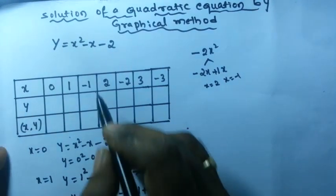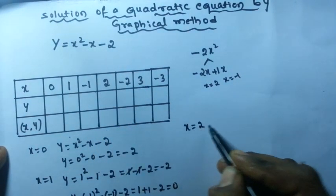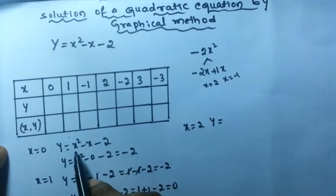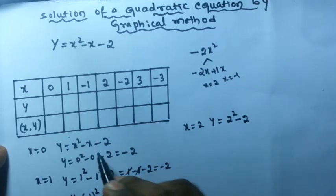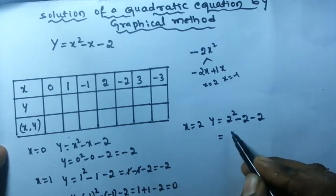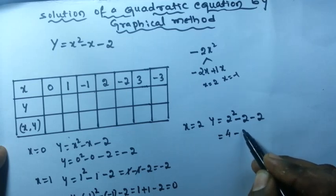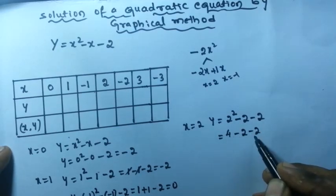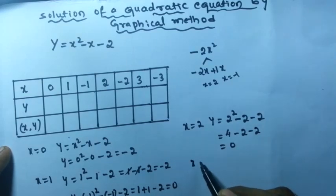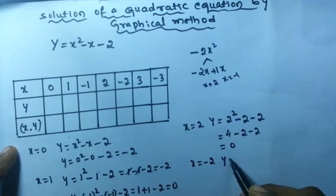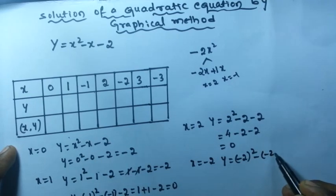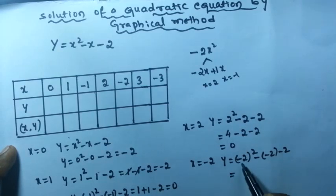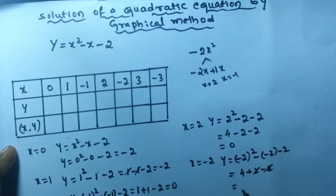If you give x = 2: y = 2² - 2 - 2 = 4 - 2 - 2 = 0. If you give x = minus 2: y = (-2)² - (-2) - 2 = 4 + 2 - 2 = 4. Plus 2 and minus 2 get cancelled from the subtraction, leaving 4.